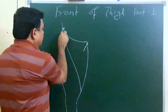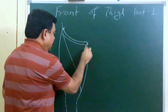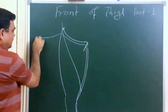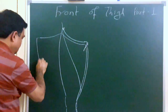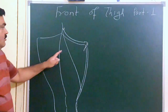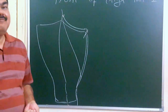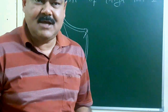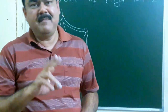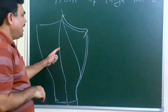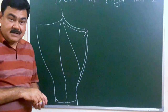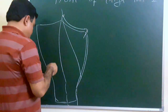If you make a cut from here to here and reflect the skin, you will find the superficial fascia. The superficial fascia of the thigh is divided into two parts: a fatty part (superficial) and a membranous part (deep). After removing the fatty part, several structures are projected in the superficial fascia.